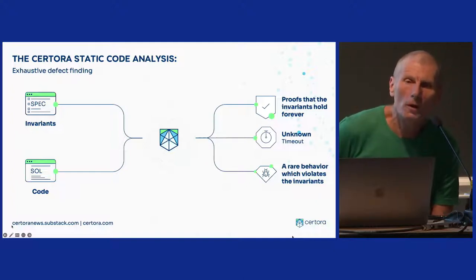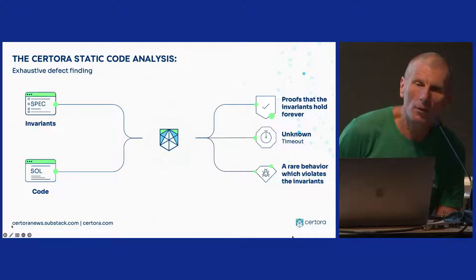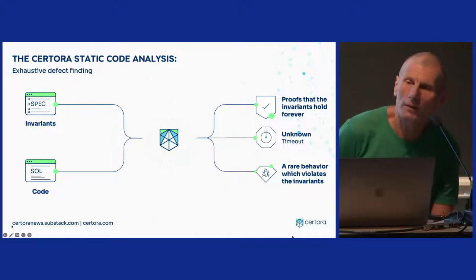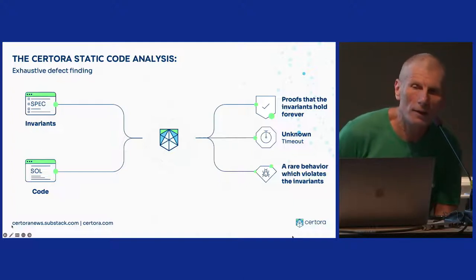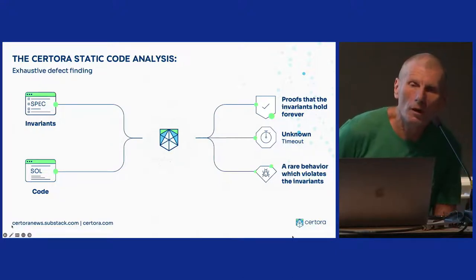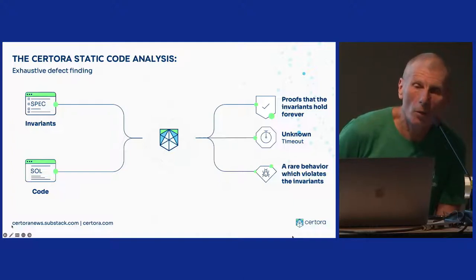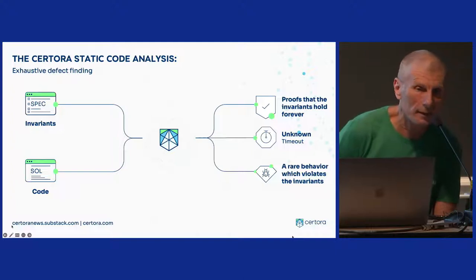Since we are talking about a computationally hard problem — undecidable in computer science — the computer cannot always prove that the invariant is maintained. Our tool fails in that the way it fails is not false positives or false negatives, but there is a timeout. You run the tool and after a long time it does not give a conclusive answer. There are ways around it — we are building other tools, and the user can help by making code more modular, writing procedure summaries.